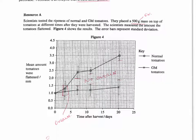Looking at resource A, we can see what they're doing. So they're putting a 500g mass, which is the control variable, it's the same as time, it allows comparison because it would affect the amount that they were flattened. And then time after harvest, so whether they've been harvested, does that also affect how much they're flattened, comparing normal GM tomatoes with this.